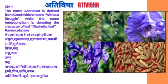Chemical composition: Atidine, Hetisine, Hetretizine, and Diterpene alkaloids. Rasikt (properties): Katu (pungent). Guna: Laghu, Ruksha. Veerya: Ushna. Vipaka: Katu. Useful part: Root.